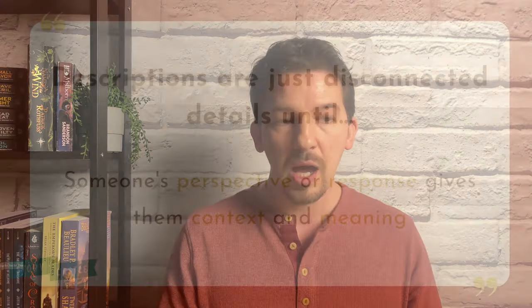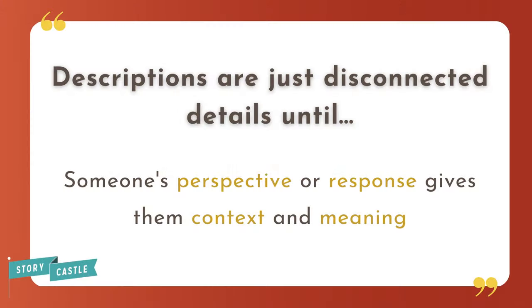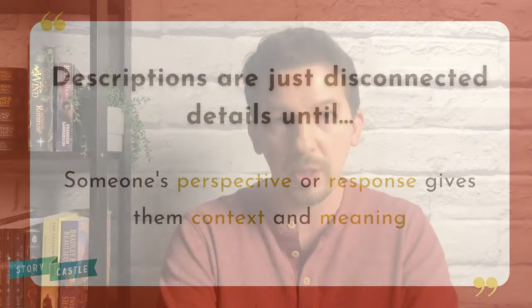Anything that you want to describe — whether it's a tree, the ocean, a building, or the way a character looks — all of the details of how something looks are kind of generic and irrelevant when they're removed from the context of the perspective of the person who is looking at them. There are two primary ways to work at this.